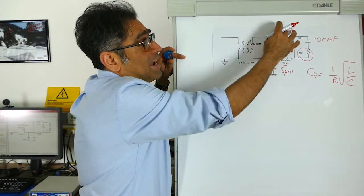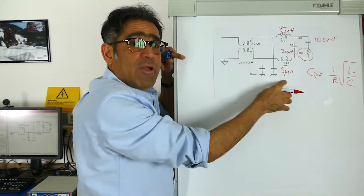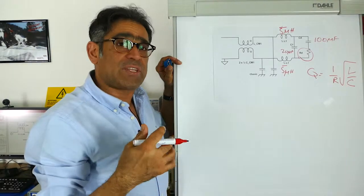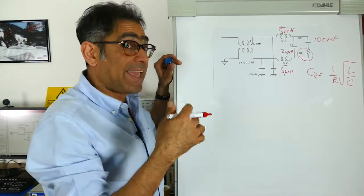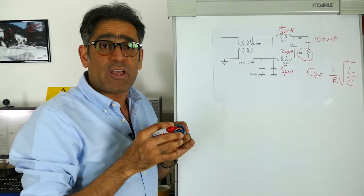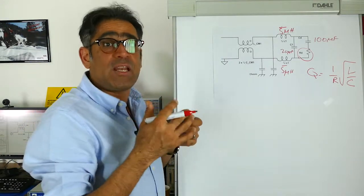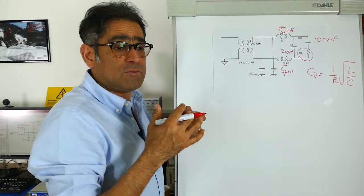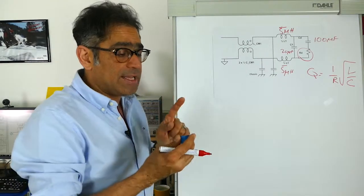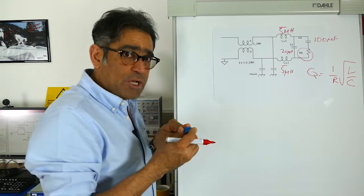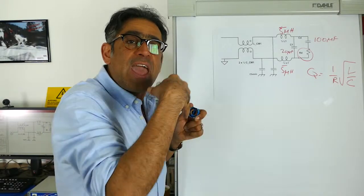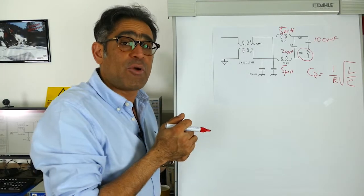I already know that I need a total of 10 microhenries worth of differential mode inductance. Because we don't want to use extra components, what I can do is go to the manufacturer's datasheet and find a common mode choke which happens to have 10 microhenries of leakage inductance. That will allow me to select very quickly the type of common mode choke that lets me avoid extra differential mode components.